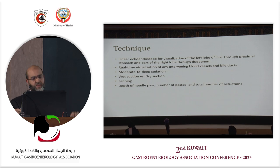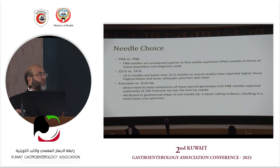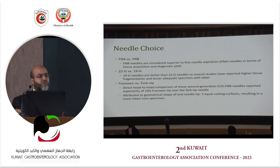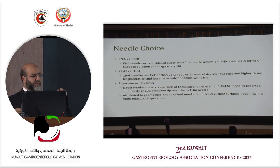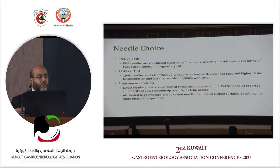Regarding needle choice, FNB needles have proven superior to FNA in tissue acquisition and diagnostic yield. The 19-gauge needle is better than 22-gauge in many studies, with less fragmentation and more adequate tissue. Regarding needle tip design, the Franseen type — with three equal cutting surfaces — showed better results than the fork-tip in a direct head-to-head comparison, providing a more intact core specimen.